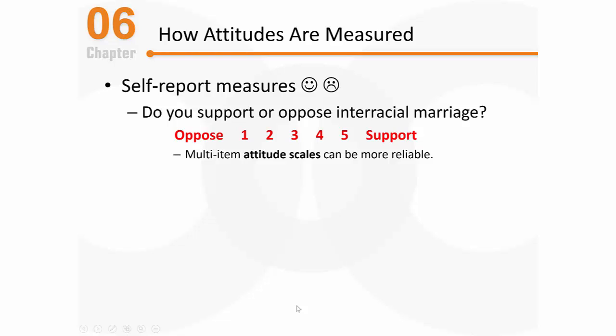Here's another way we can improve upon typical methods of measuring attitudes. With questions about interracial marriage, we sometimes worry if people will give us their true response. It's not too common to use this technique, but it is interesting — it's called the bogus pipeline. It can be used to encourage honest responding. It's essentially a fake lie detection device, based on the false claim that the experimenter has some direct pipeline into your true thoughts.